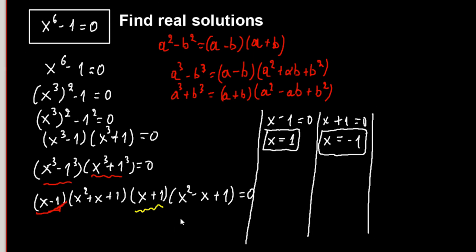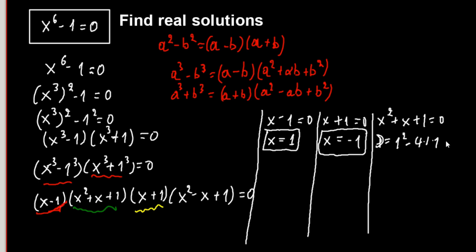Now let's take the first quadratic equation: x² plus x plus 1 equals to 0. If we find the discriminant, we have 1² minus 4 times 1 times 1, which equals minus 3, which is less than 0, so we have no real solutions here.